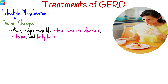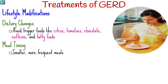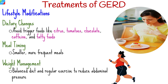Managing GERD involves a combination of lifestyle modifications, medications, and in some cases, surgical interventions. Lifestyle modifications include dietary changes: avoid trigger foods like citrus, tomatoes, chocolate, caffeine, and fatty foods. Opt for smaller, more frequent meals to prevent stomach distension. Lose excess weight through a balanced diet and regular exercise to reduce abdominal pressure.